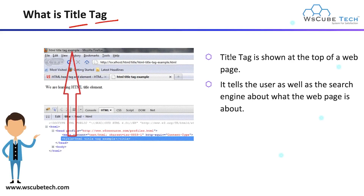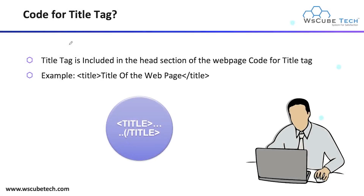What is a title tag? The title tag is the tag which is shown at the top of the web page. It tells the user as well as the search engine about what the web page is about — what information is inside your web page. For example, here you can see that our title is 'HTML title tag example', so in this particular page we will learn about the title tag.